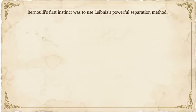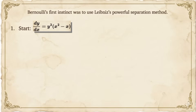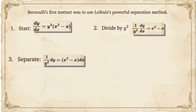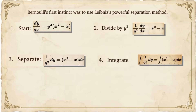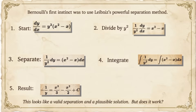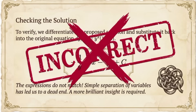Let's try to separate variables. Step 1: manipulate the equation. We have dy/dx = y² · (x² − x). Dividing both sides by y² gives (1/y²) · dy/dx = x² − x. In Leibniz notation, this becomes (1/y²) dy = (x² − x) dx. This looks like we've separated variables successfully — let's try integrating. The integral of (1/y²) dy equals the integral of (x² − x) dx. This gives −1/y = x³/3 − x²/2 + c. But hold on — checking by substituting back into the original equation, it doesn't match. This isn't the right solution.